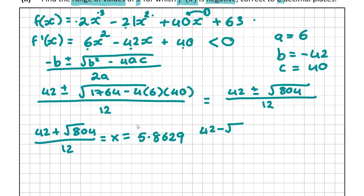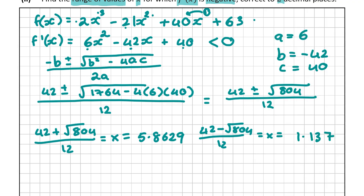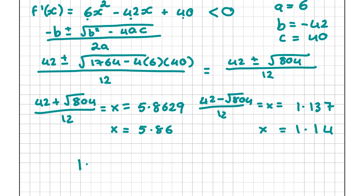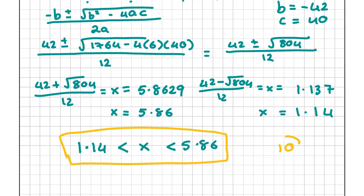The first value of x is 42 plus root 804 divided by 12, which gives 5.8629. The second value is 42 minus root 804 divided by 12 — a tip: just press the back button on the calculator and change the addition to subtraction — giving 1.137. Correct to two decimal places: x equals 5.86 and x equals 1.14. So the range of values for which the derivative is negative is 1.14 less than x less than 5.86.